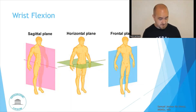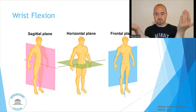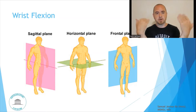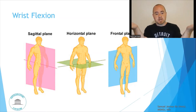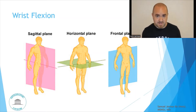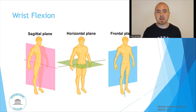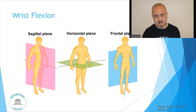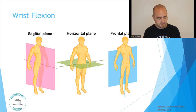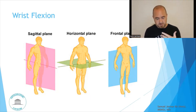In the anatomical position, with hands at the side, palms facing up, and thumbs facing out, wrist flexion is movement of the palms towards the front of the body. That motion occurs in the sagittal plane on a transverse or horizontal axis. The majority of that motion involves the carpals in relation to the radius.